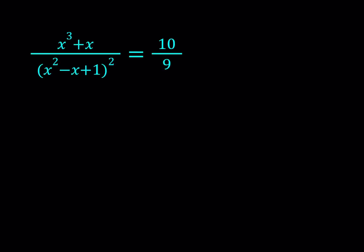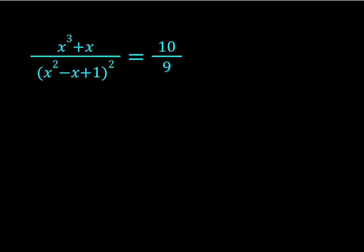Hello everyone, in this video we're going to be solving a rational equation. We have x cubed plus x divided by the quantity x squared minus x plus 1 squared equals 10 ninths and we're going to be solving for all values of x, real and complex. I'm going to be presenting two methods, let's start with the first one.